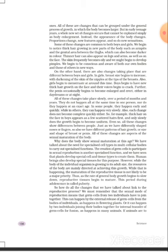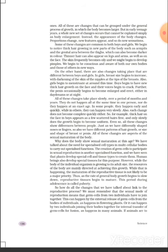So how do all the things that we have talked about link to the reproductive process? We must remember that the sexual mode of reproduction means that the germ cells from two individuals have to join together. This can happen by the external release of germ cells from the bodies of the individuals, as happens in flowering plants, or it can happen by the two individuals joining their bodies together for internal transfer of germ cells for fusion.